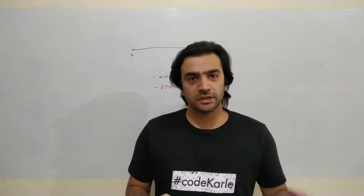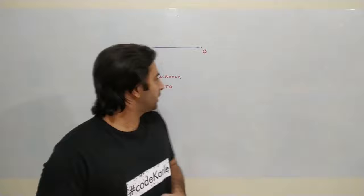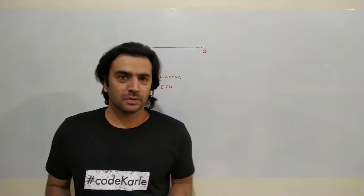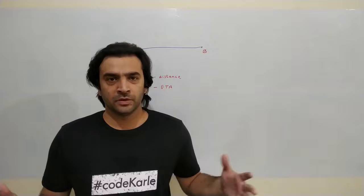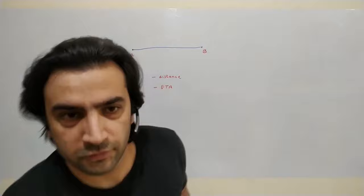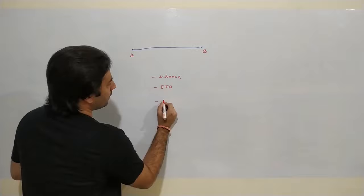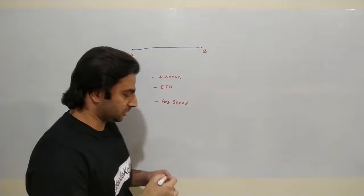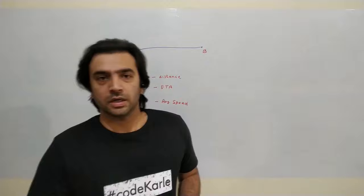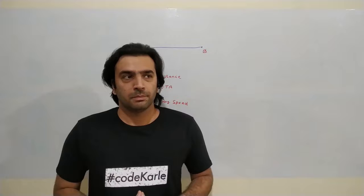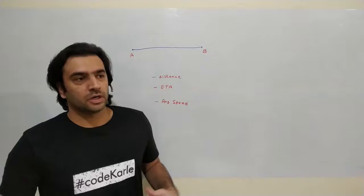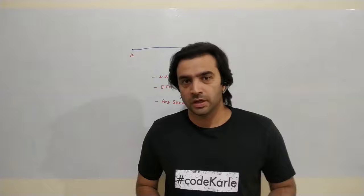Now let's talk about how we come up with the weights on an edge. The first obvious weight is distance between two points. Along with that, we keep an ETA — under normal traffic conditions, how much time does it take to go from point A to point B. Having both distance and time, we can derive average speed, since speed equals distance divided by time.